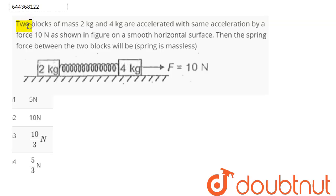Question is, two blocks of mass 2kg and 4kg are accelerated with same acceleration by a force of 10N as shown in figure on a smooth horizontal surface. Then spring force between the two blocks will be, spring is massless.